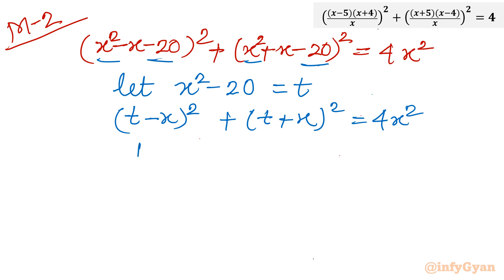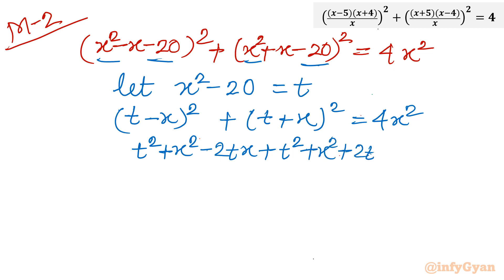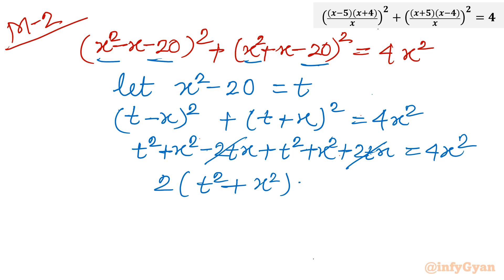Expanding: t squared plus x squared minus 2tx plus t squared plus x squared plus 2tx equals 4x squared. The 2tx and minus 2tx cancel. What remains is 2 times (t squared plus x squared) equals 4x squared. Dividing by 2 and simplifying, t squared equals x squared.